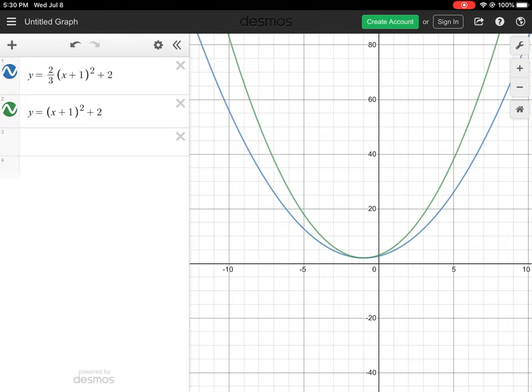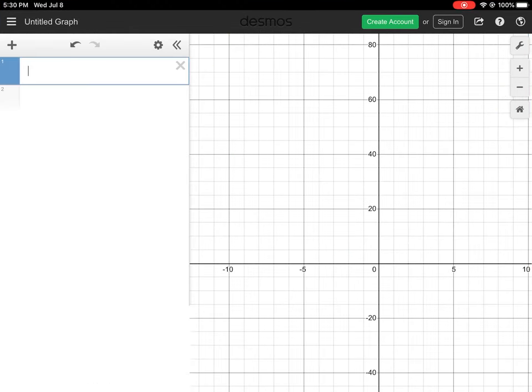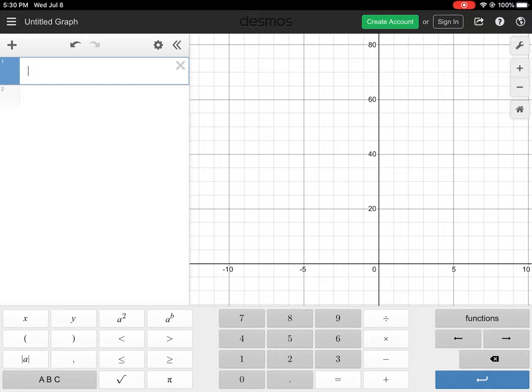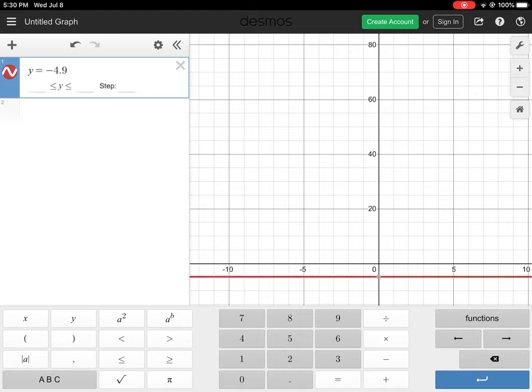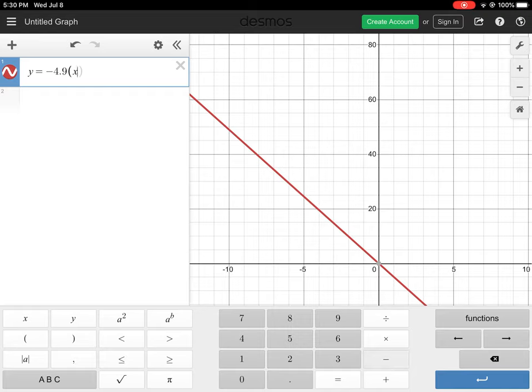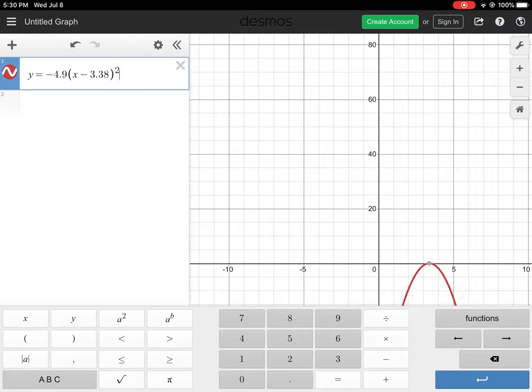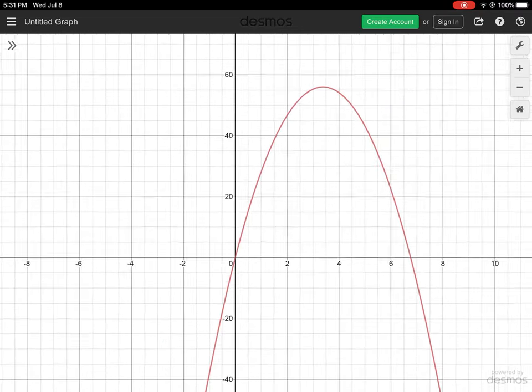I'm going to clear any other functions and type in y equals negative 4.9 times x minus 3.38, close the brackets, squared, plus 56. So now here is our graph.